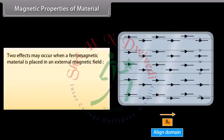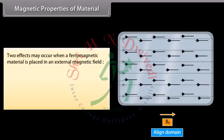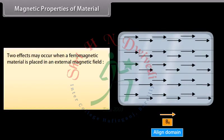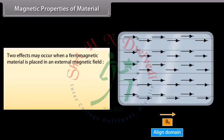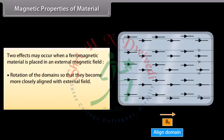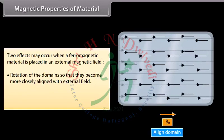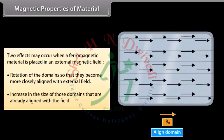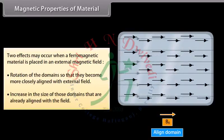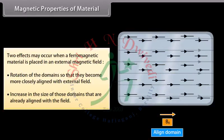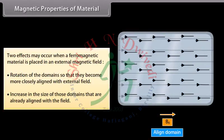Two effects may occur when a ferromagnetic material is placed in an external magnetic field: rotation of the domains so that they become more closely aligned with the external field, and increase in the size of those domains that are already aligned with the field.